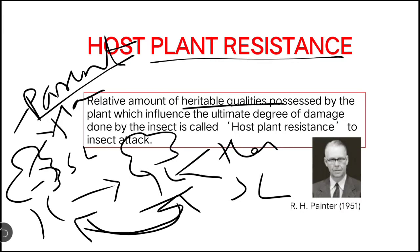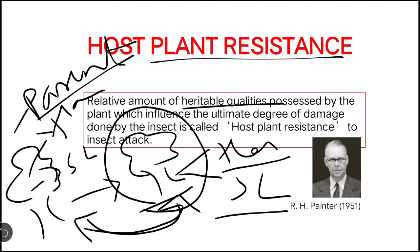The heritable quality is possessed by the plant, and that quality influences the ultimate degree of damage done by the insect. If this plant has the capacity to resist Helicoverpa armigera and Spodoptera litura — to withstand their damage or show resistance towards it — then it comes under HPR.